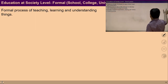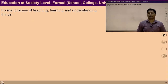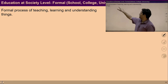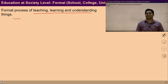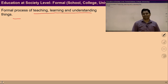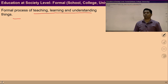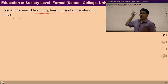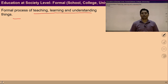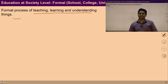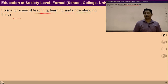At the society level, the child can learn through a formal process of teaching, learning, and understanding at school, college, and university. Informally, the child can learn from media, television, drama, movie halls, festivals, and functions. Direct learning is held through the teaching process, and indirect learning happens through various environments. The child learns many skills at school and college, but education of values like relationships and cooperation can be easily practiced at home till the age of five.